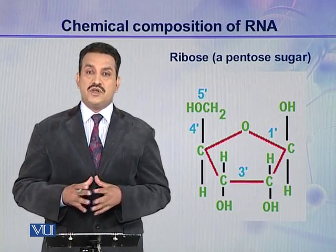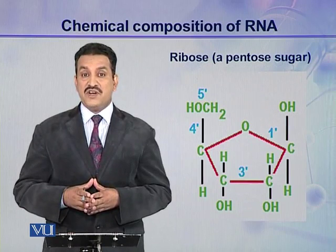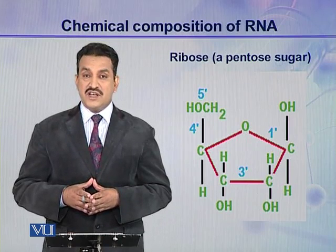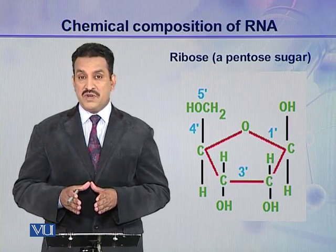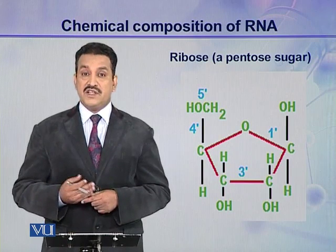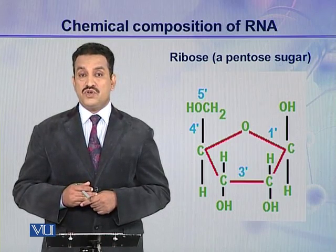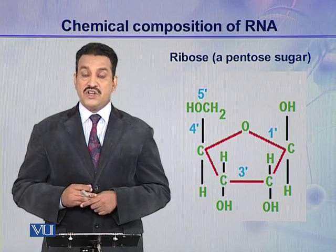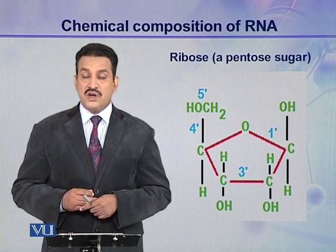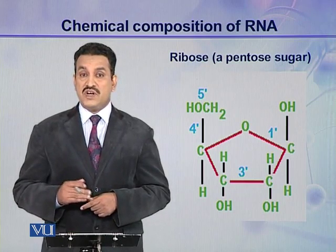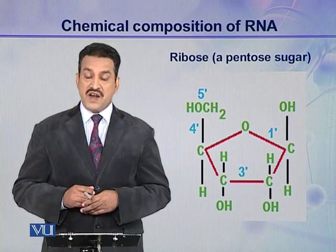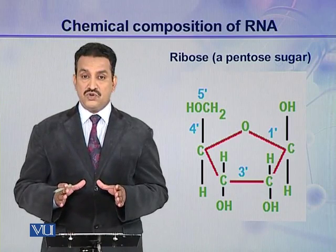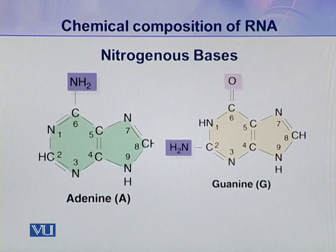The first component of ribonucleic acid is a pentose sugar, and this pentose sugar is ribose. In DNA, this sugar is also present but in its derivatized form — deoxyribose sugar. You can see that at carbon number 2, an OH group is present. But in deoxyribose sugar, only hydrogen was present — oxygen was removed. So here, the pentose sugar is ribose instead of deoxyribose.